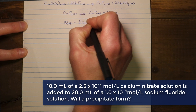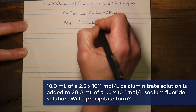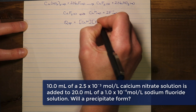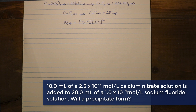We are not calculating the KSP in this case; rather, we are determining the QSP. Much like we used Kc and Qc, what we are doing here is trying to establish if we are at equilibrium. Our next task is to figure out what the concentration of calcium ions and fluoride ions are at this point.